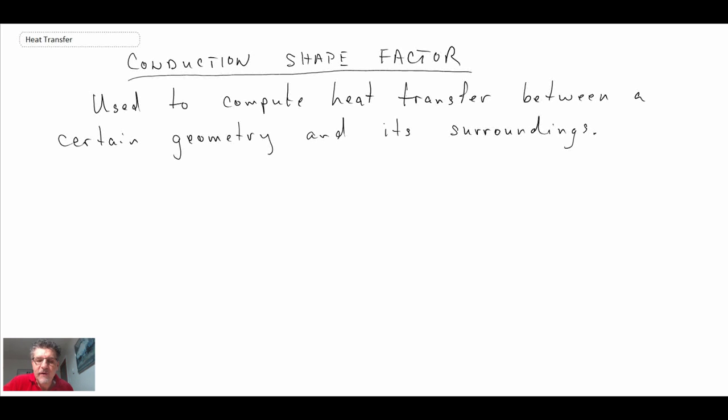The shape factor is a technique or method that enables us to compute heat transfer between a certain geometry and its surroundings. The way that we do this is we have an equation Q equals KS delta T. In a way, it's kind of like Fourier's law, but delta T is overall.